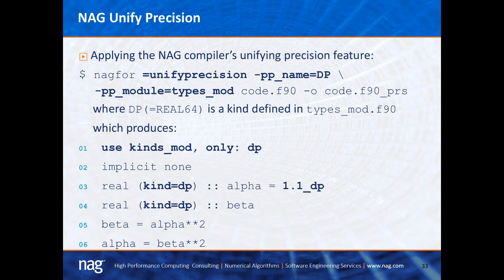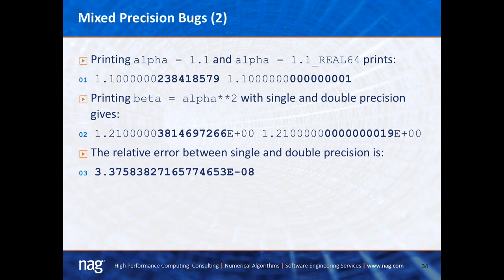If I execute the previous code with the mixed precision bug, printing alpha = 1.1 versus alpha = 1.1_REAL64 shows the difference: the left-hand output has 1.000 with junk at the end, while the right-hand output is much more accurate. Printing beta = alpha squared with single versus double precision also shows junk on the left-hand side, with a more accurate solution on the right. The relative error between single and double precision is shown as well. This may not be an issue for all codes, but could matter greatly for systems with high condition numbers that are very sensitive to small differences.